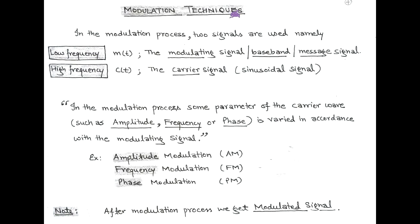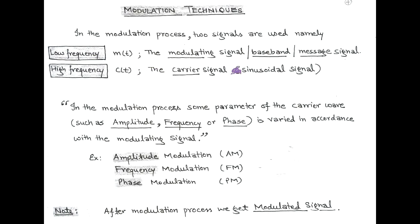In the modulation process, we require two signals. The first is called the modulating signal, or baseband signal, or message signal, denoted by m(t), where t is time. This modulating signal is generally a low-frequency signal. In order to transmit this low-frequency signal over a long distance, we require a modulation technique. In the modulation technique, we use a carrier signal. This carrier signal is a sinusoidal signal and it is of very high frequency.